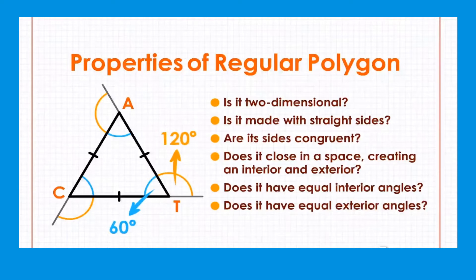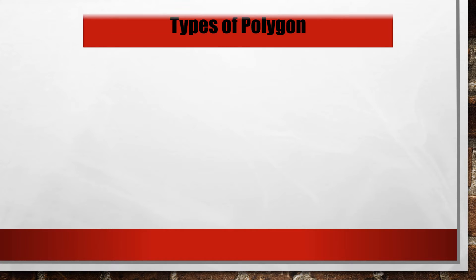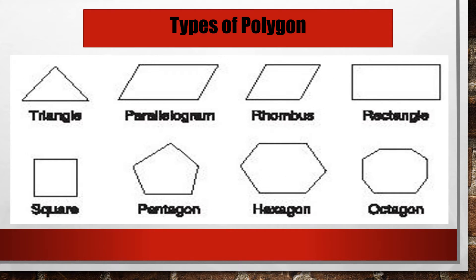Types of polygons: number one is the triangle, next is parallelogram, rhombus, rectangle, square, pentagon, hexagon, and octagon.